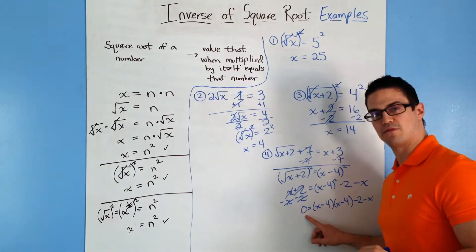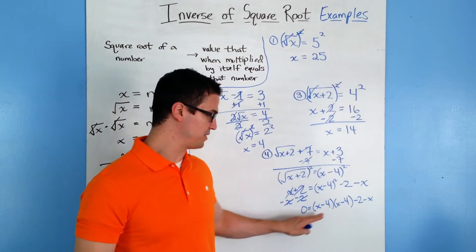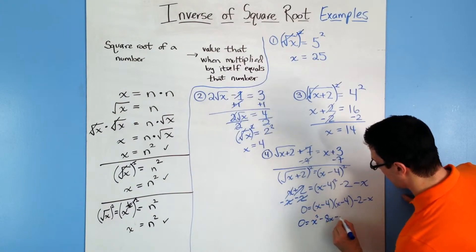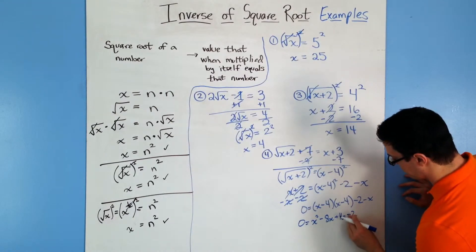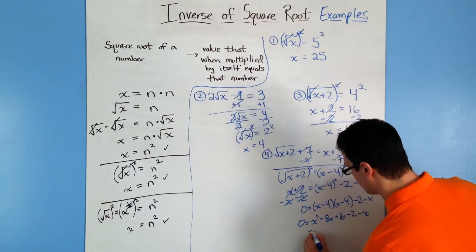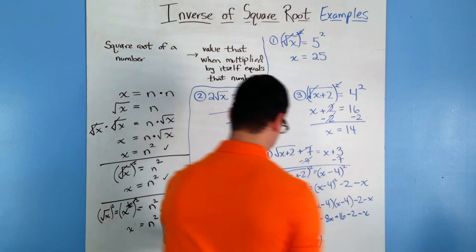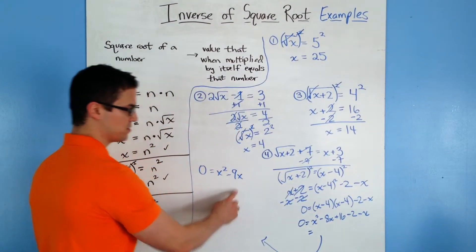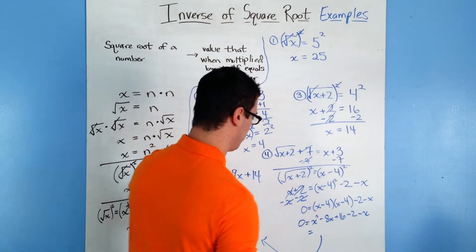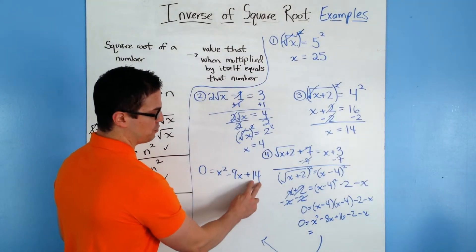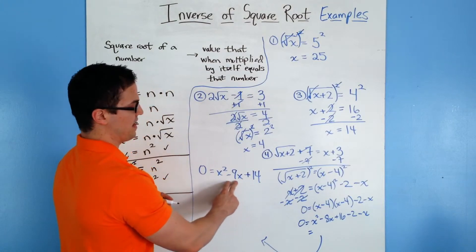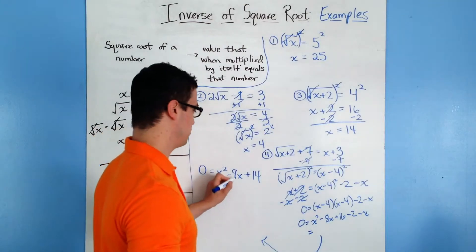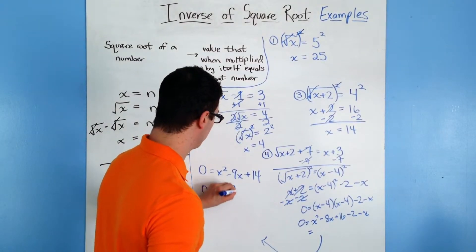This should look similar to the last unit where we used the zero product property to solve for x. If you distribute everything out, you get 0 equals x squared minus 8x plus 16 minus 2 minus x. Simplifying: 0 equals x squared minus 9x plus 14. You need two numbers that multiply to 14 and add to negative 9 — those are negative 7 and negative 2. So you get the factors x minus 7 and x minus 2.